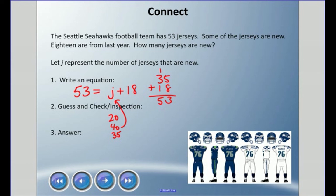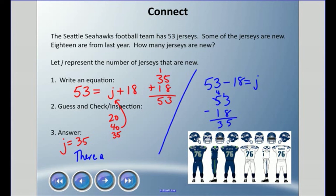Now if I do the inspection method, that means I am looking to go to a subtraction here. So 53 minus 18 is going to equal my j. So I can show my work here. I need to borrow, 13 minus 8 is 5, 4 minus 1 is 3. There, I can find my answer again. So whatever method you chose, either guess and check or inspection, you still get to the answer of j equals 35. And it is a word problem, so we probably should say there are 35 new jerseys. Go Seahawks!